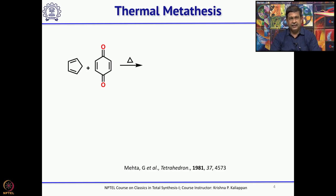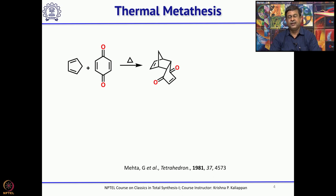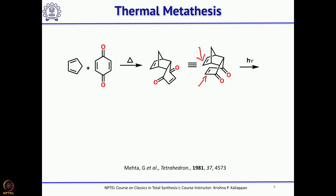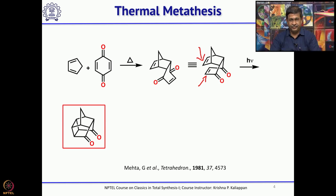It involves 5 steps to arrive at the triquinane moiety. The first step is a [4+2] cycloaddition between cyclopentadiene and 1,4-benzoquinone to get a tricyclic compound. If you redraw this compound, you can see two double bonds close to each other, which upon photochemical reaction can undergo an intramolecular [2+2] photocyclic addition to give a highly strained compound.